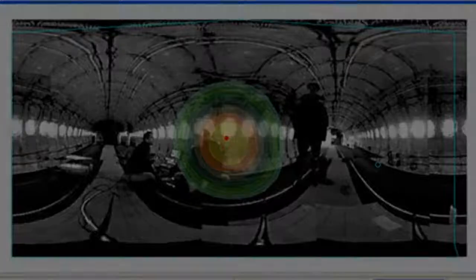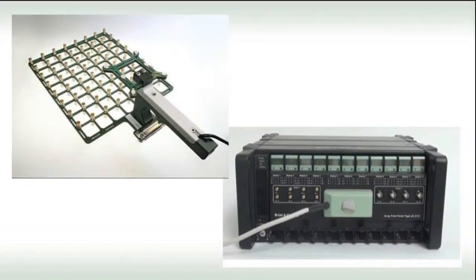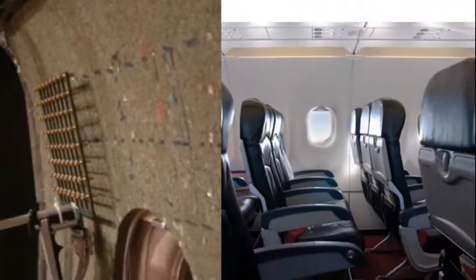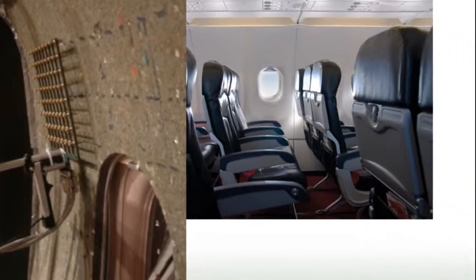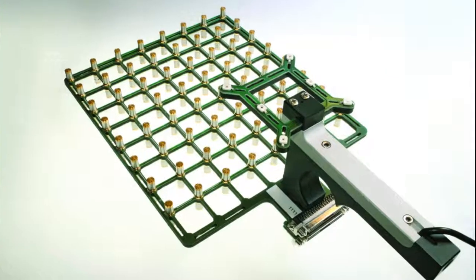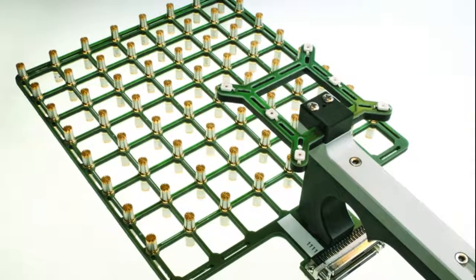Hand-held microphone arrays can be used close to the surfaces inside the cabin to determine absorption, entering intensity, and transmission loss. An important requirement for measurements in aircraft is that the system must be easy to install and easy to use.